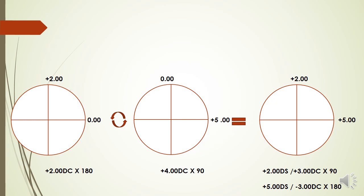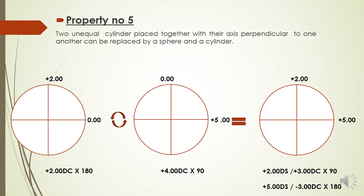The fifth property is the property of sphero-cylinder. Two unequal cylinders placed together with their axes perpendicular to one another can be replaced by a sphere and a cylinder. For example, a plus 2 cylinder at 180 and a plus 5 cylinder at 90 — when kept perpendicular, the combination gives a sphero-cylindrical result. Using cross notation: 2 and 5, this cross becomes a sphero-cylinder.